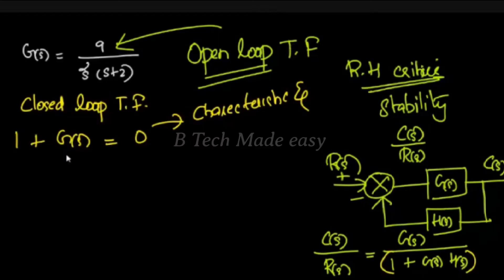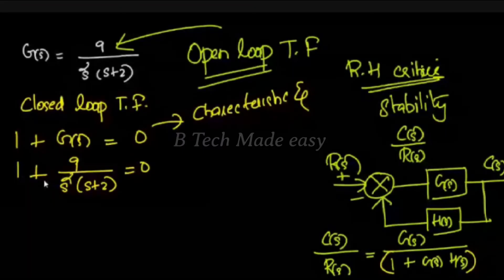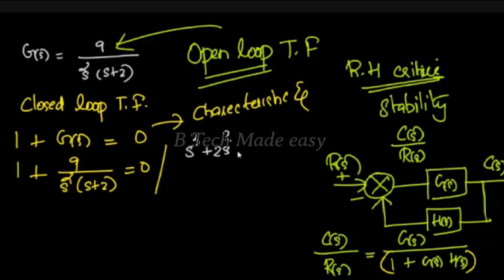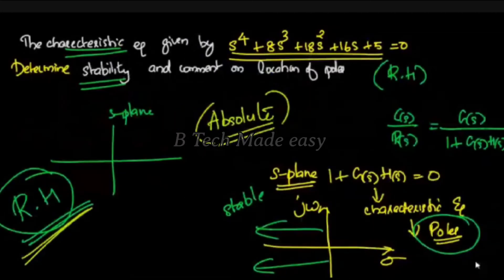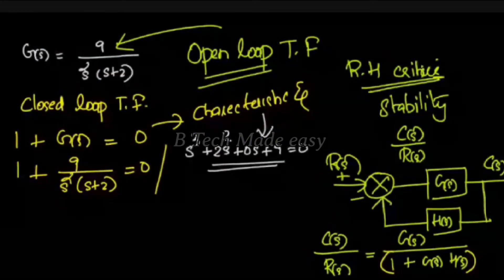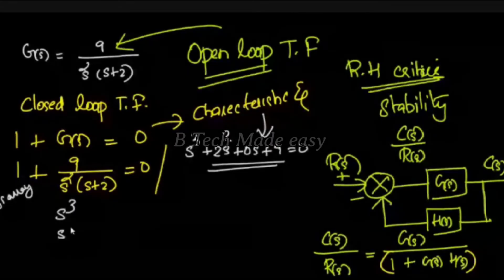So, if we want to find out G(s), we substitute G(s) as 9 divided by s² into (s + 2) equal to 0. That gives us the characteristic equation. Now we have to find out that G(s) is equal to 0. 1 is raised to 0.